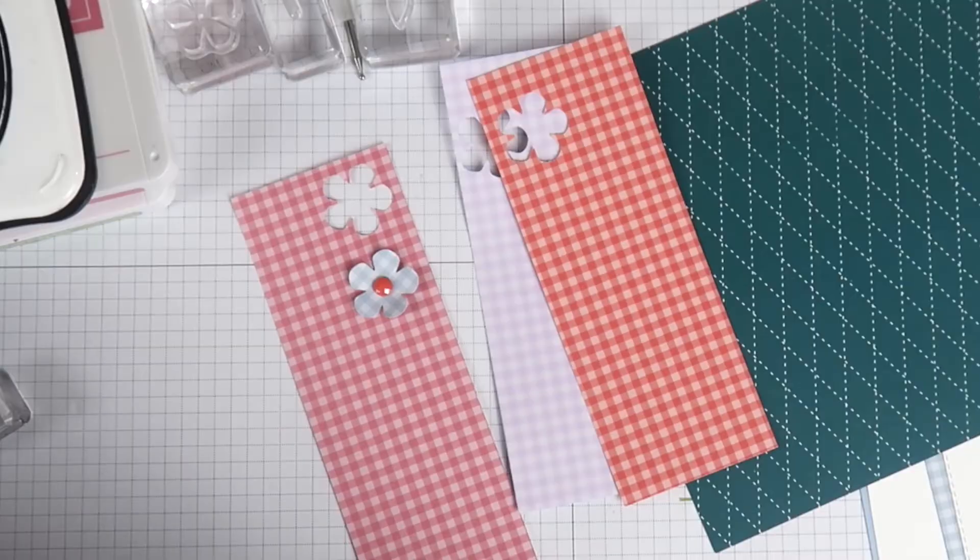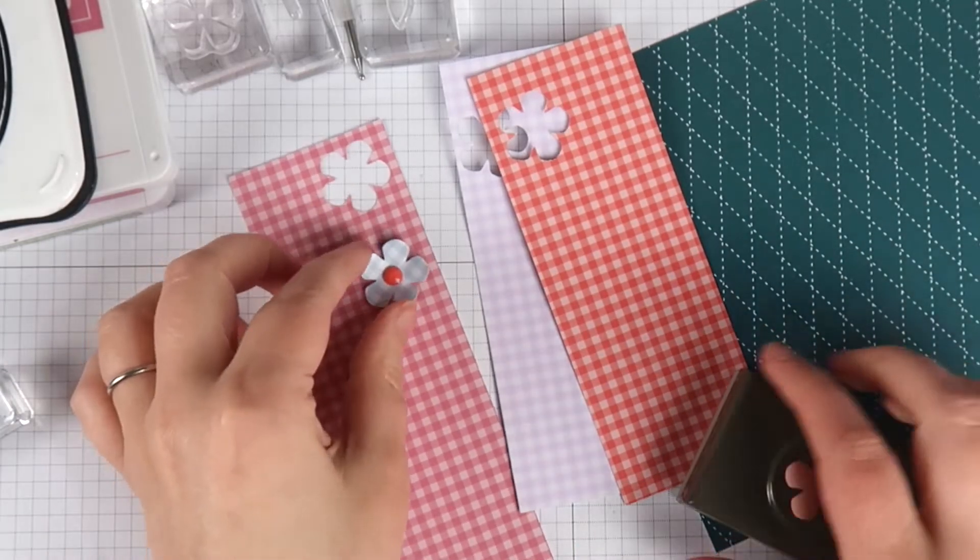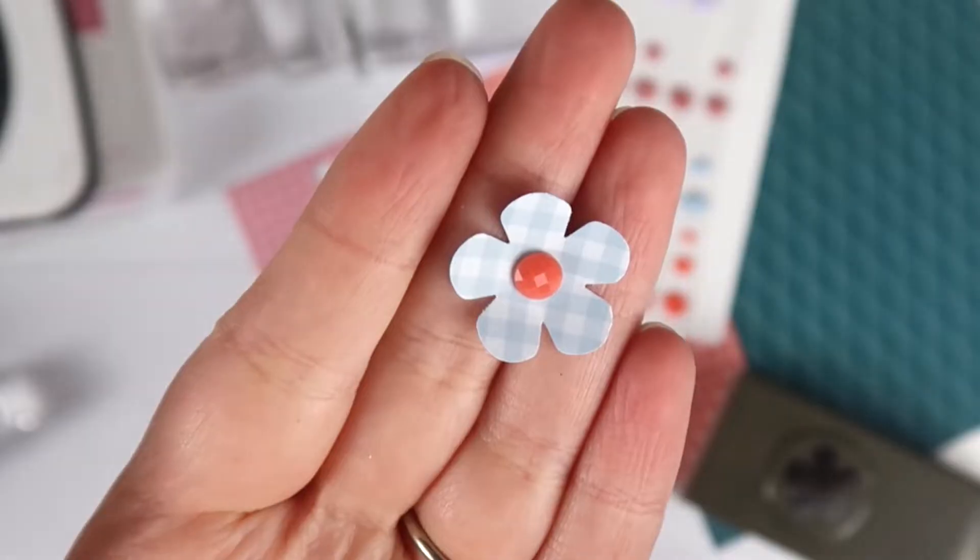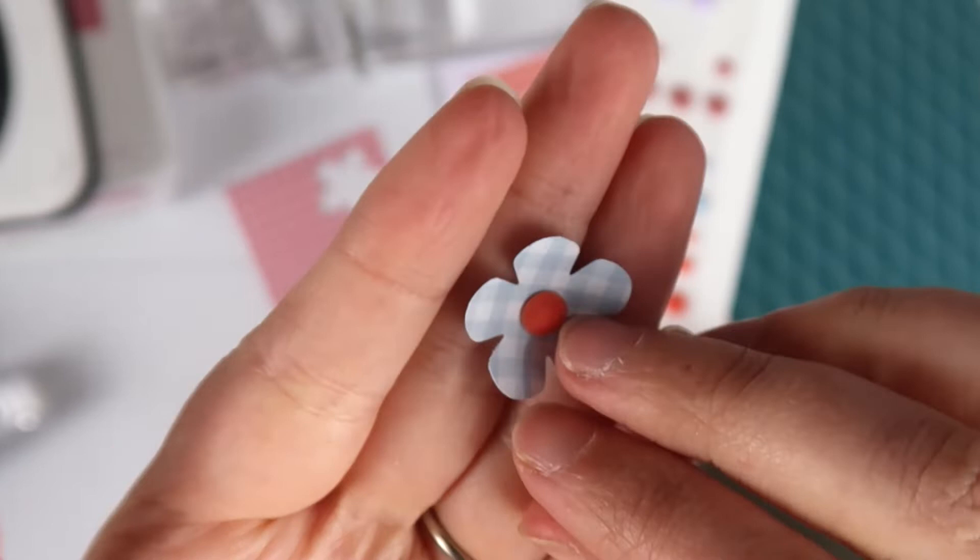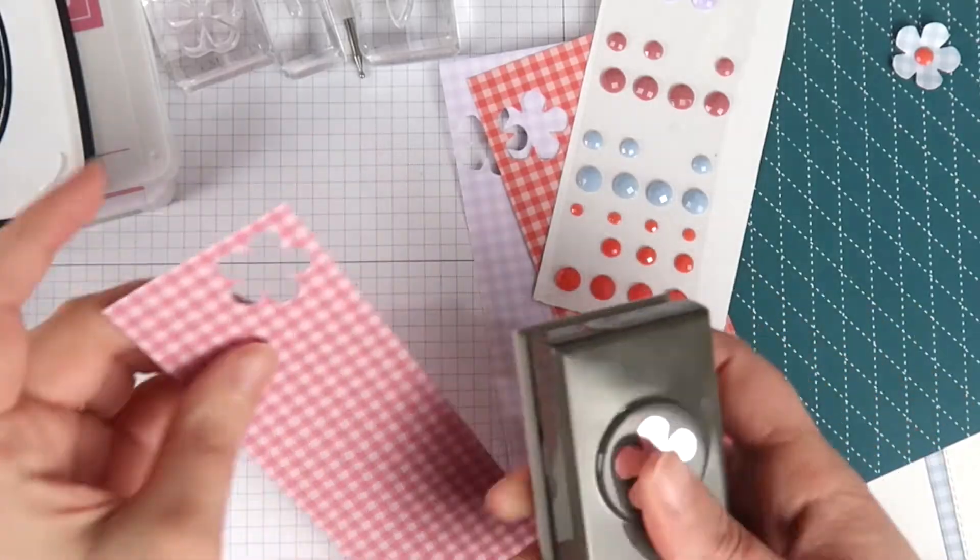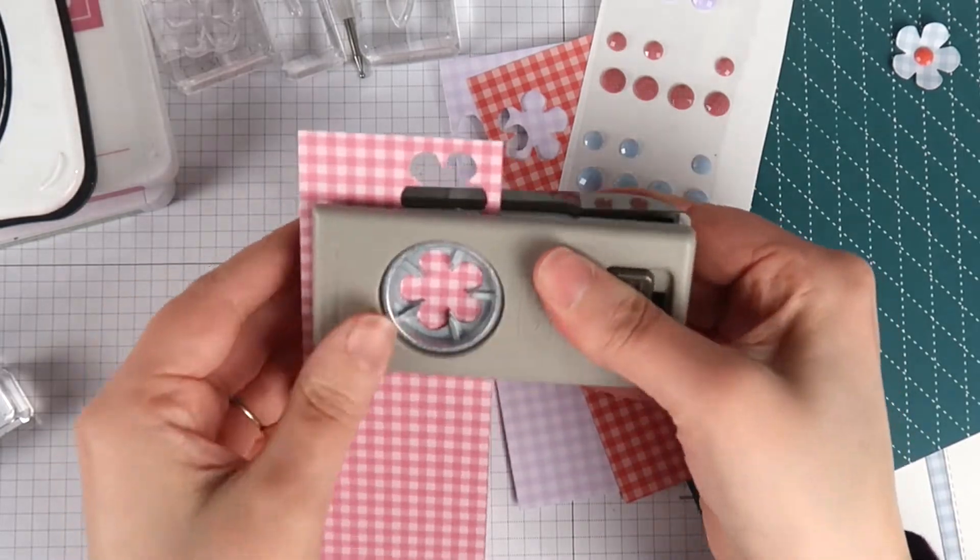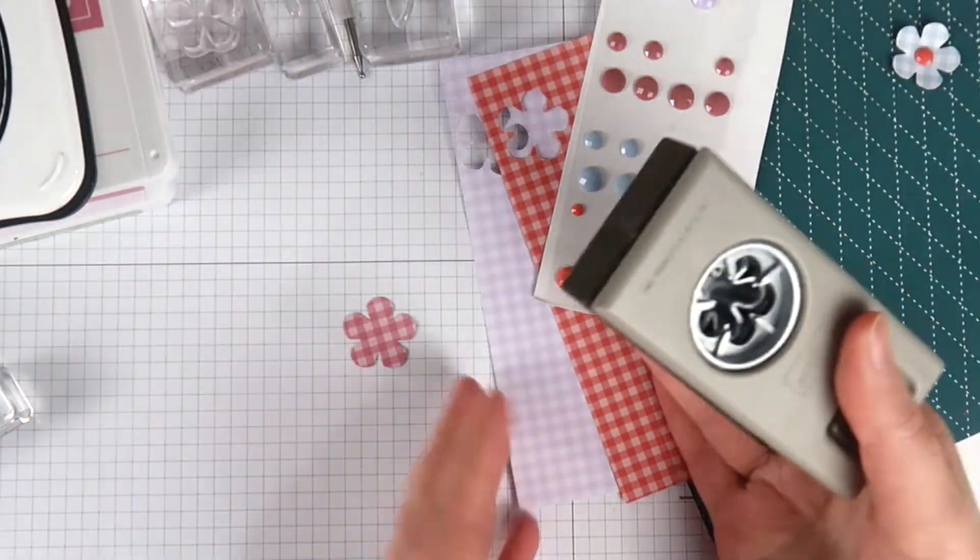To make my flowers, I'm going to be using some pattern paper as well as some enamel elements to go in the middle. You can see here when they're done they're kind of 3D. I am punching out each of my flowers to be a different color.